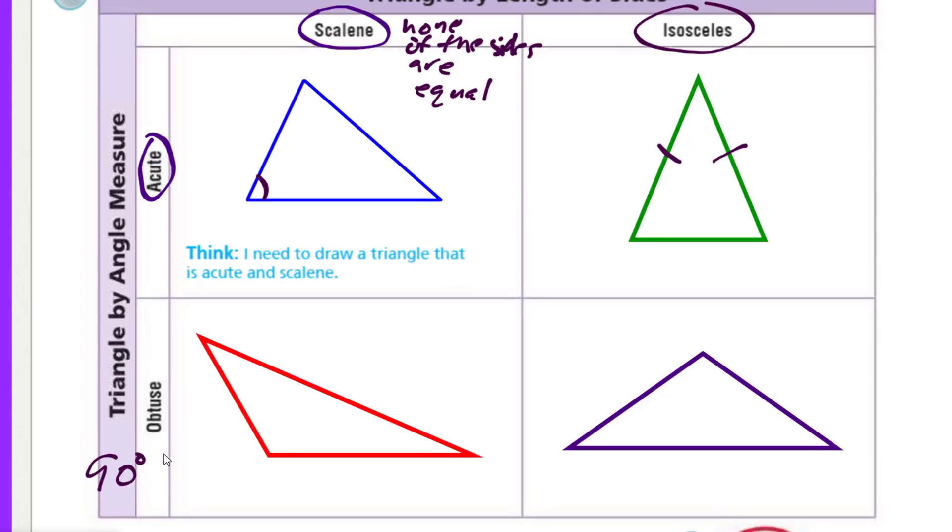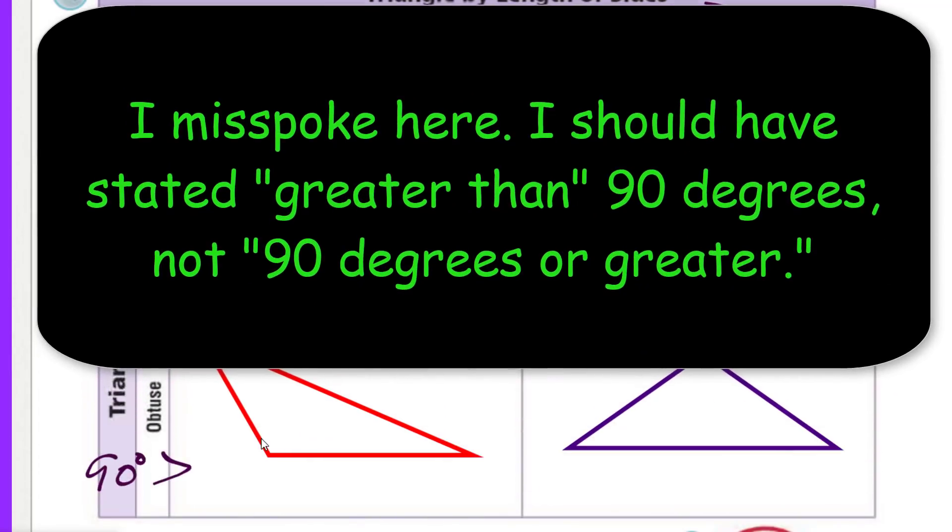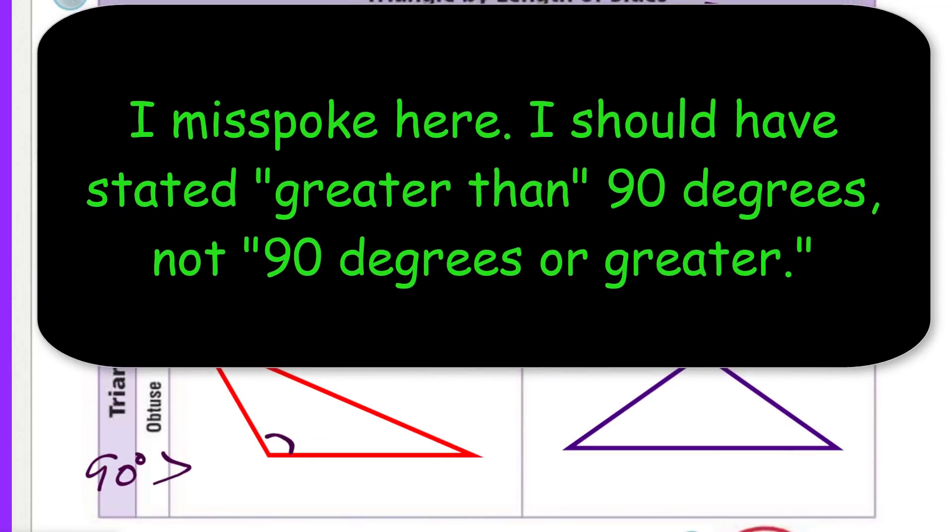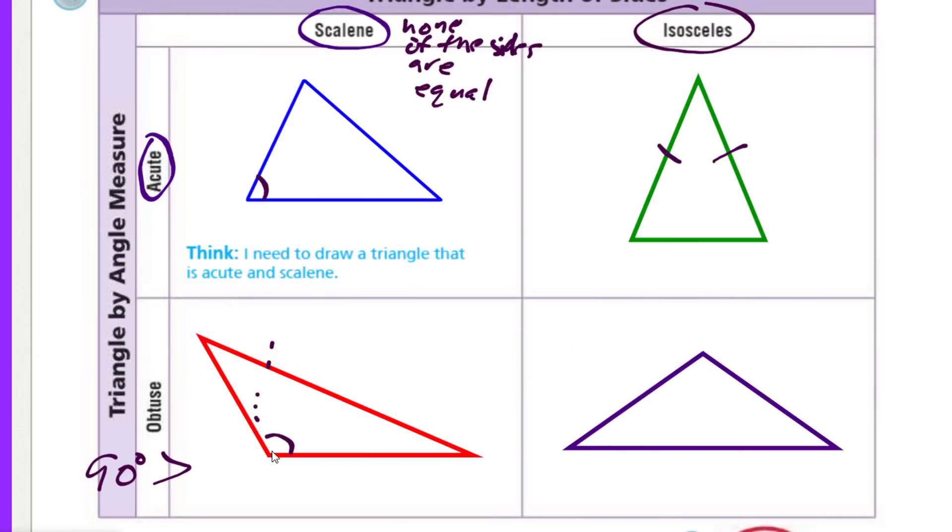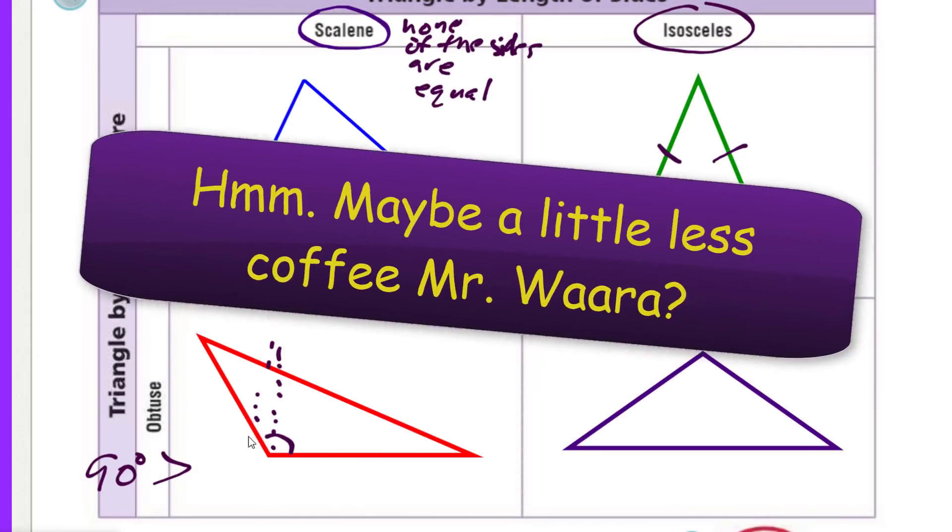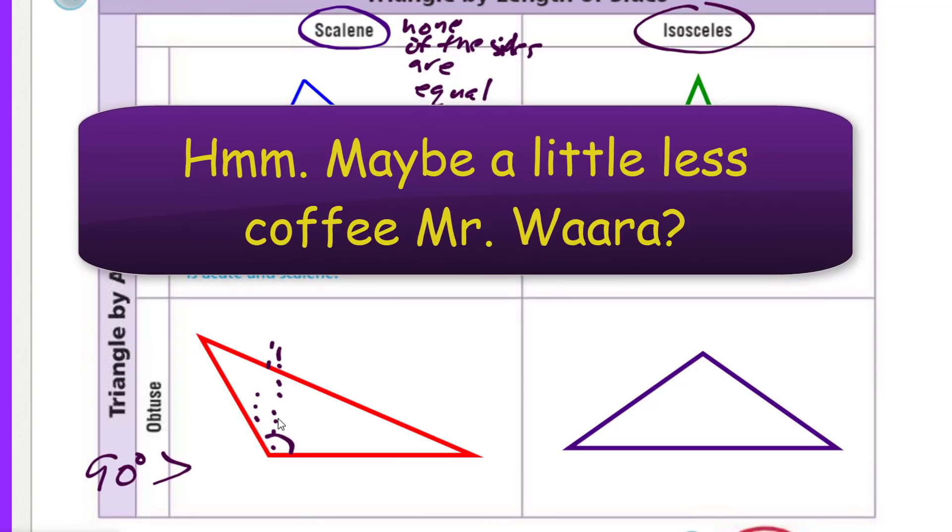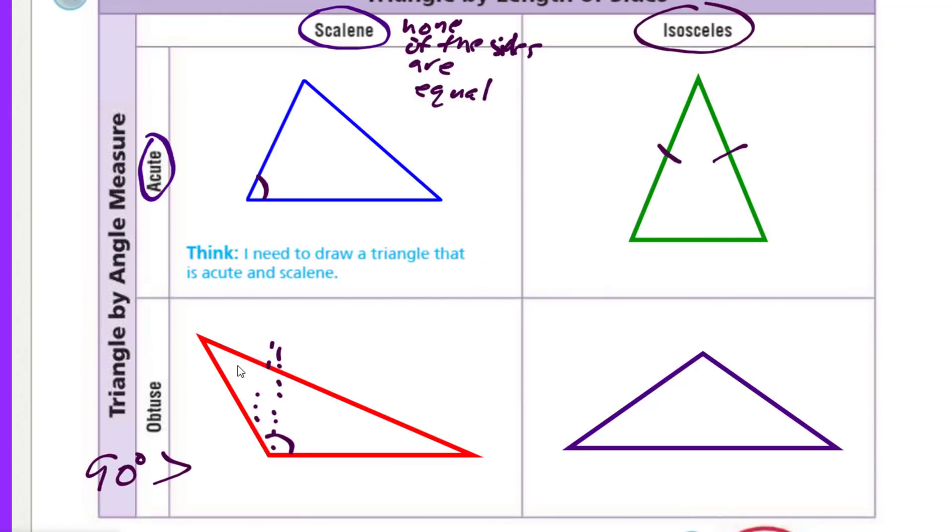Now we come over here. We have obtuse, remember? That's 90 degrees or greater. And here we have that angle right here that's 90 degrees or greater because the right angle would probably come down. And it's also scalene because none of these sides here are equal. Now we come over to isosceles. These two sides are equal. You can probably tell they look pretty equal. But the angle here itself, it's greater than 90 degrees. And that's the obtuse. So we're matching that up with the isosceles and the obtuse, the obtuse with the scalene, acute with scalene, acute with isosceles.